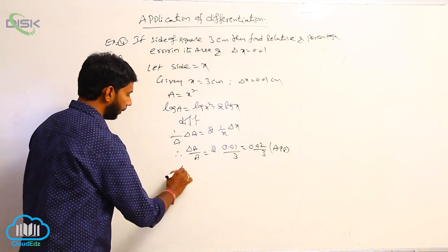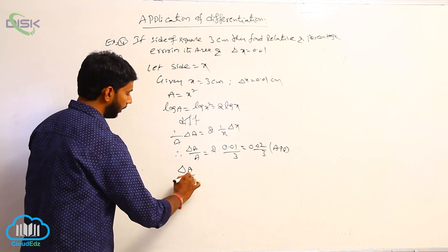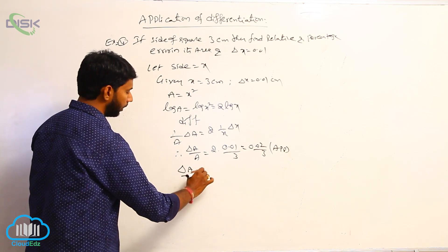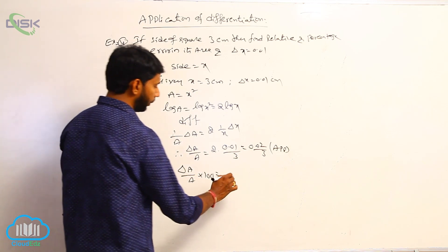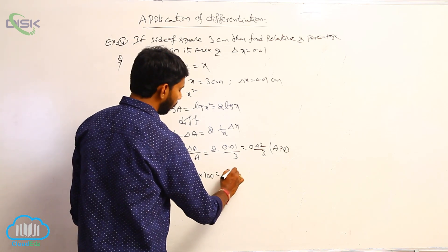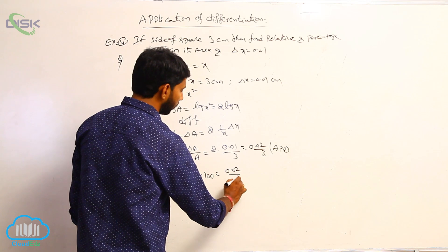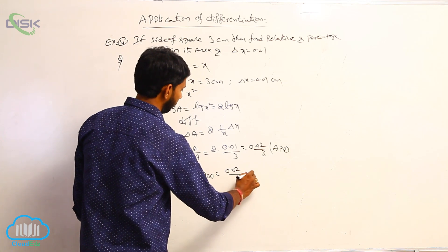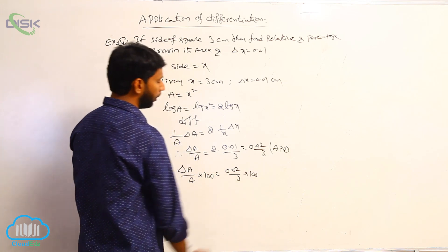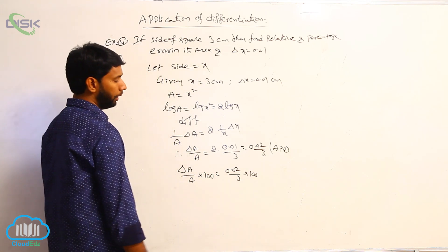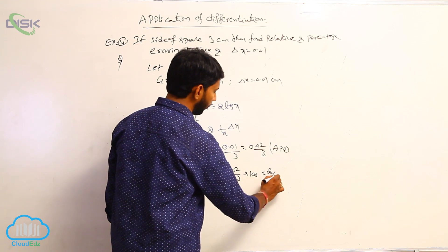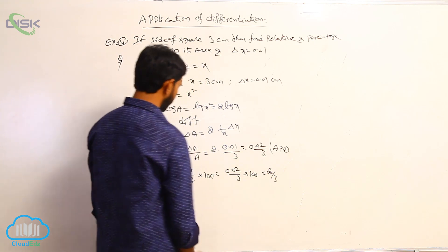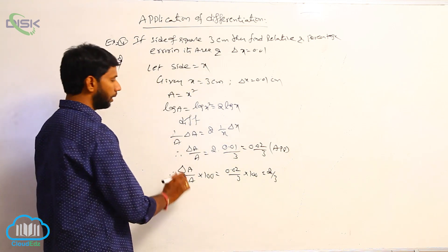Multiplying both sides by 100: percentage error = (delta A / A) × 100 = (0.02/3) × 100 = 2/3 percent. This is the percentage error in the area of the square.